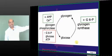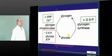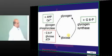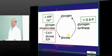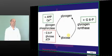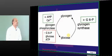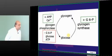A mnemonic involving a wedding feast helps remember that when glucose increases after eating, it is converted into glucose-6-phosphate, which then stimulates glycogen synthase to store it as glycogen.